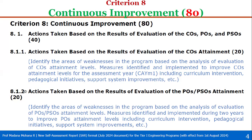Then 8.1.2 — this is the same as 8.1.1, but here based on the results of evaluation of program outcomes and program specific outcomes. Actions taken based on the results of evaluation of the program outcomes and program specific outcomes, total weight is 20. Here we have to identify the areas of weaknesses in the program based on the analysis of evaluation of program outcomes and program specific outcomes attainment levels. Here we have to identify the measures and implement during two years — whereas for COs you have to take one assessment year. So, implement during two years to improve program outcomes attainment levels, including curriculum intervention, pedagogical initiatives, support system improvements, etc.